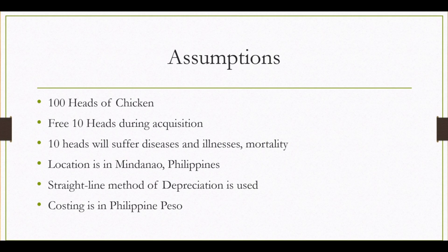These are the costing assumptions we are going to use in our costing procedure. First, 100 heads of chicken will be used for our costing, and there are free 10 heads during the acquisition stage. Out of the 110 chickens, 10 heads will suffer diseases and illnesses — the mortality rate. Location is in Mindanao, Philippines.